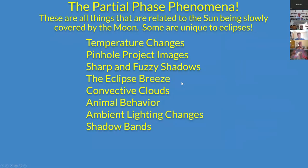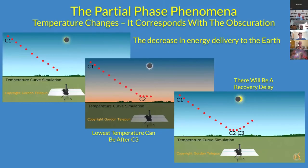I'm going to dive into the partial phase phenomena now. These are all the things related to the sun being slowly covered by the moon, and some are unique to eclipses. Temperature is easy in an eclipse — it corresponds with the percentage of obscuration. There's a decrease in energy delivery to the Earth, so the temperature goes down.